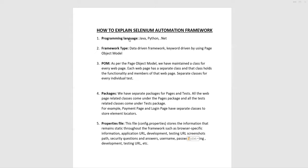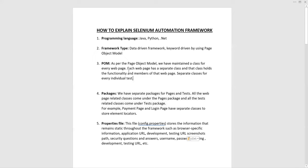In a BDD framework you might be using feature files and step definition files. Then you explain Page Object Model as well. The key points to cover are: programming language, framework type, POM, packages, and properties file. For each of these you should give a short summary of its significance and role in the overall framework.